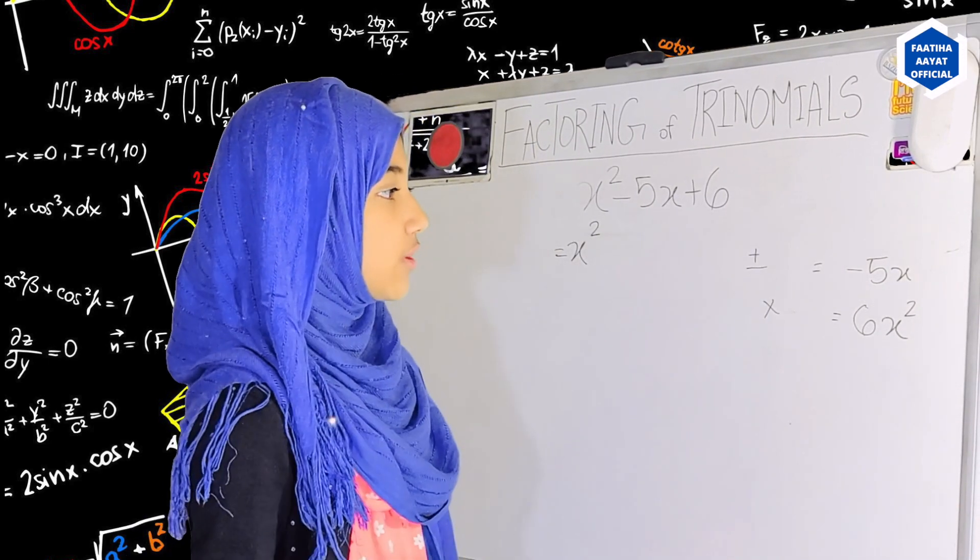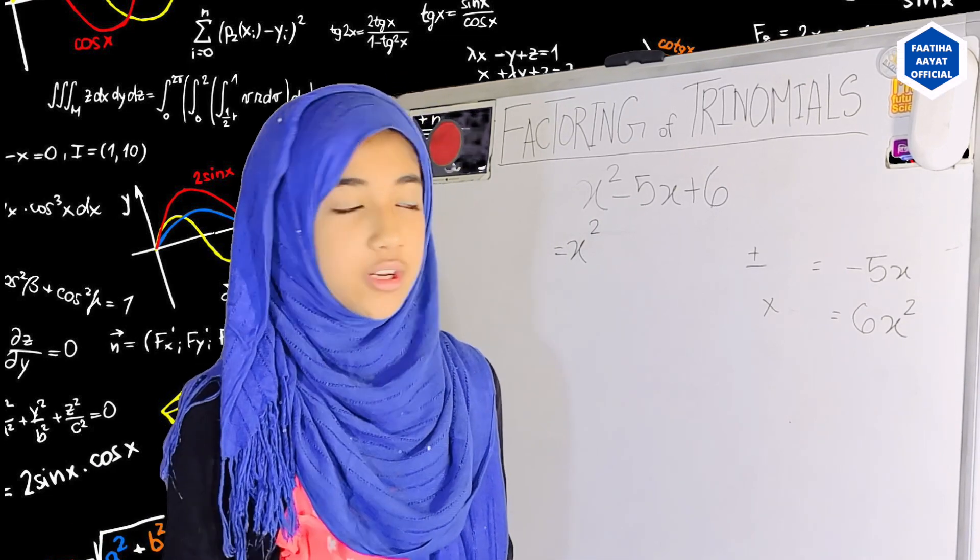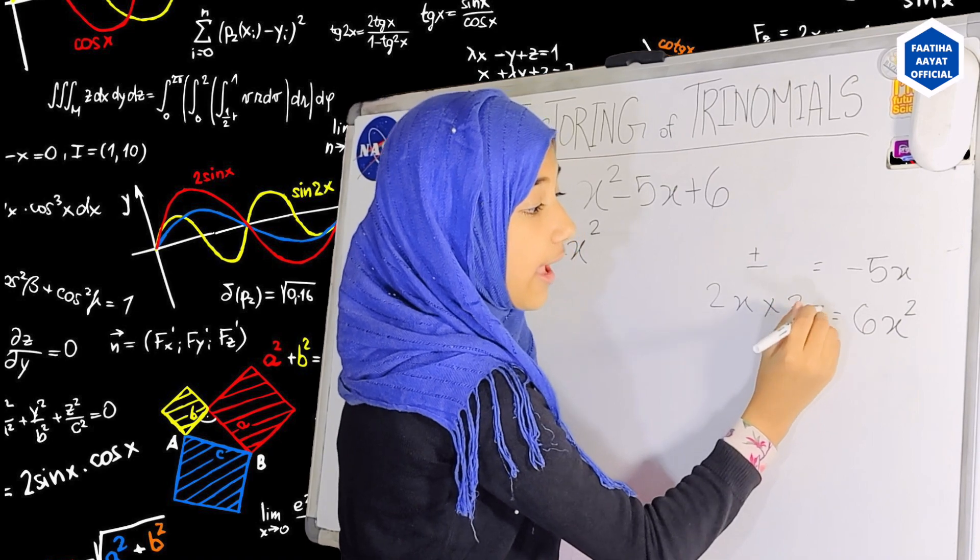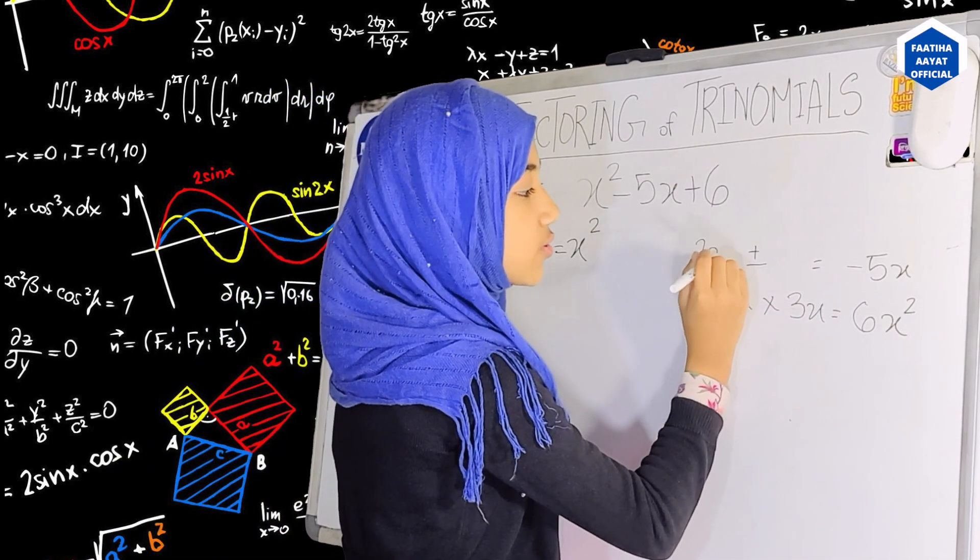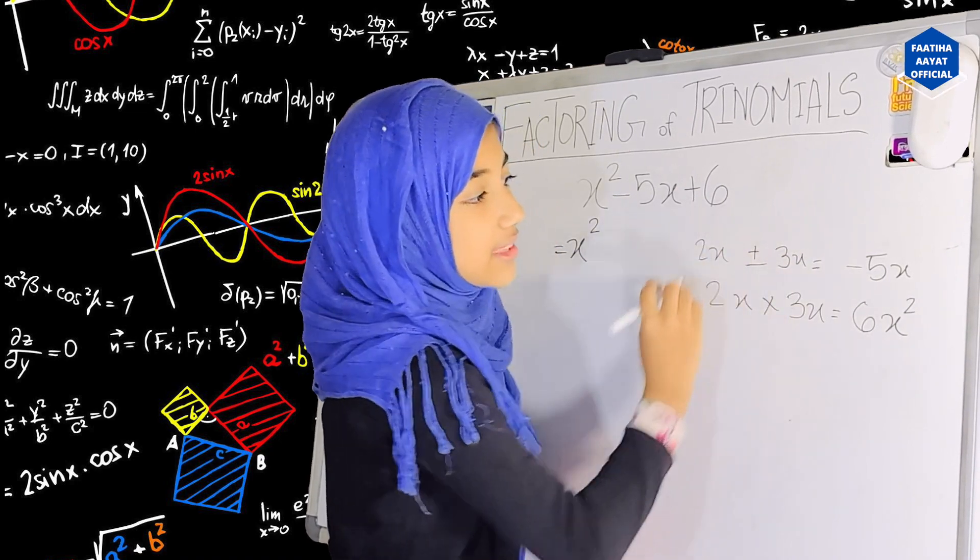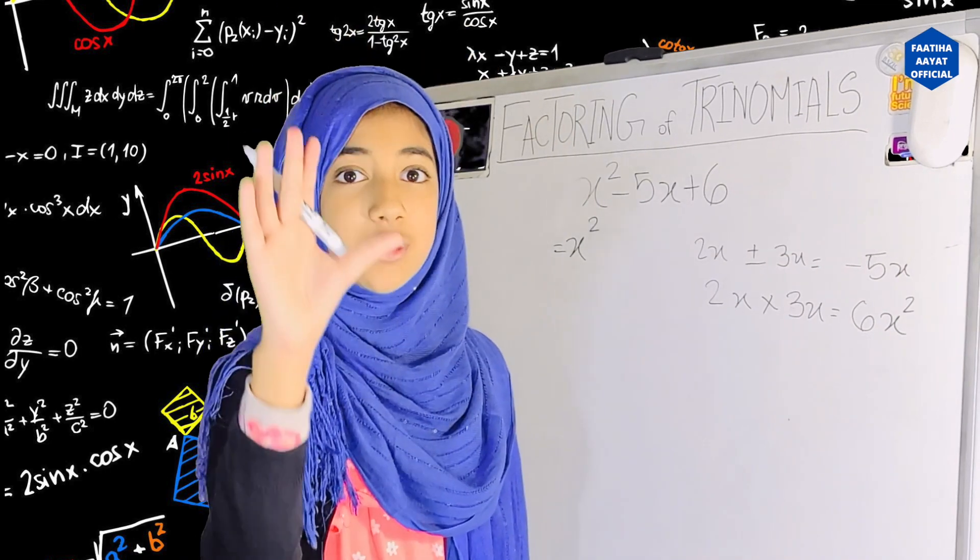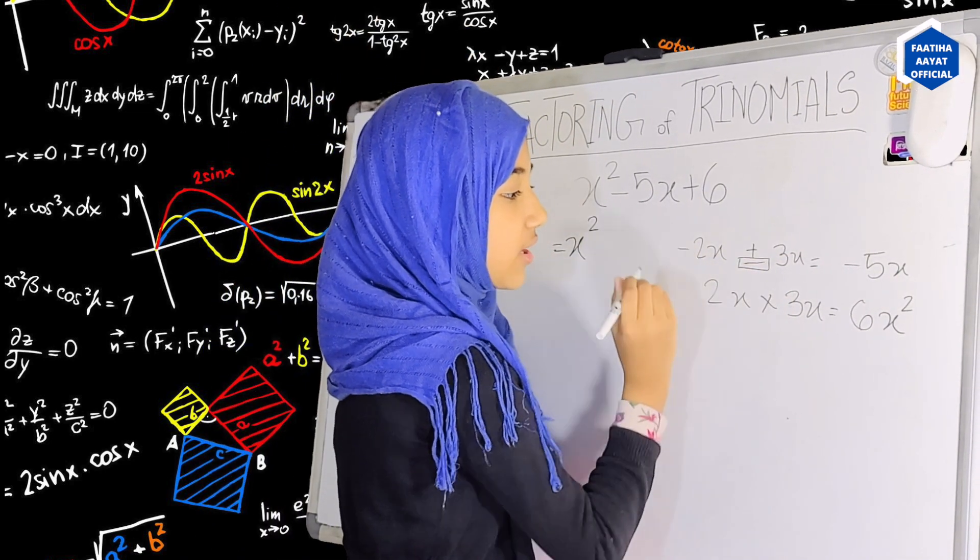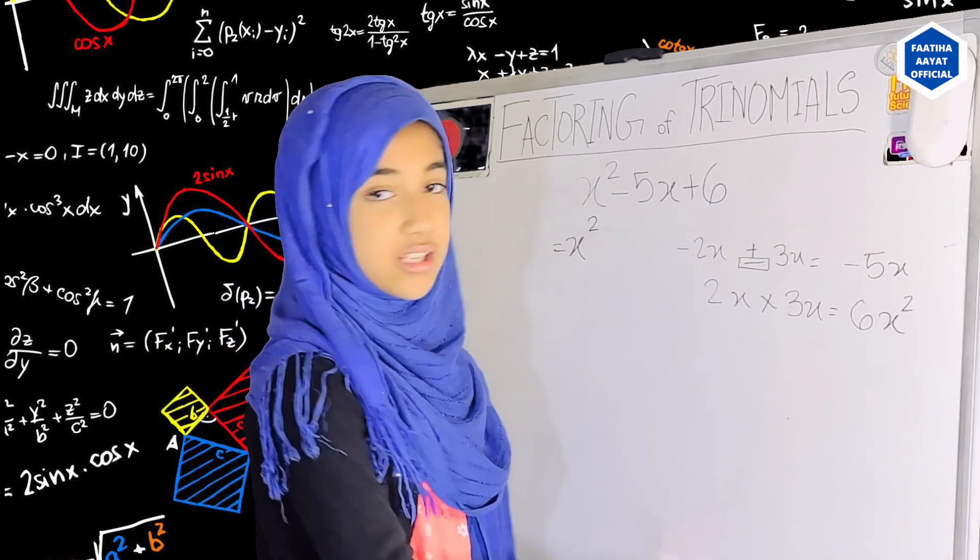Okay, so what we will do here is 6 and 1 does work, but why not try 2 and 3, because 2x and 3x does make 6x squared. So if we write 2x and 3x here and we add them it will become 5x, but we need minus 5x. So what we need to do is we need to subtract these two and put a minus sign in front of here. So minus and minus is plus. We add these two and the sign is minus. Perfect! It works out!